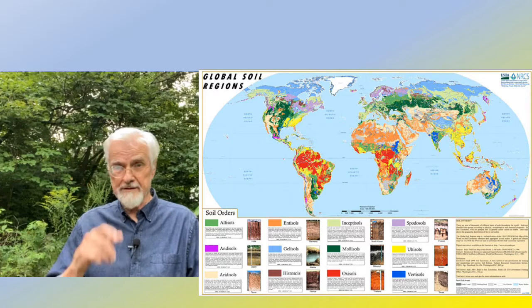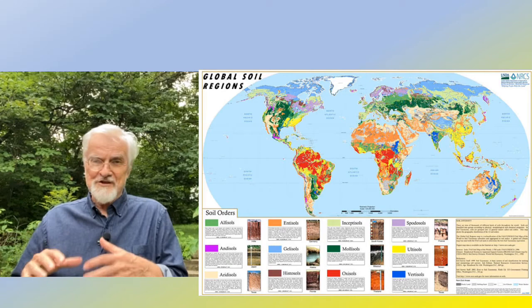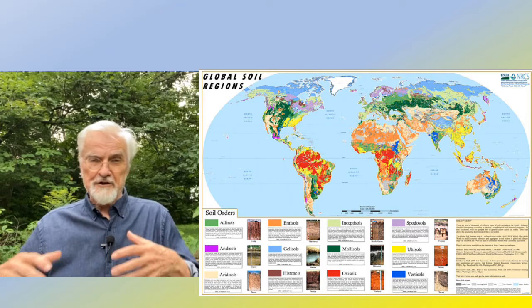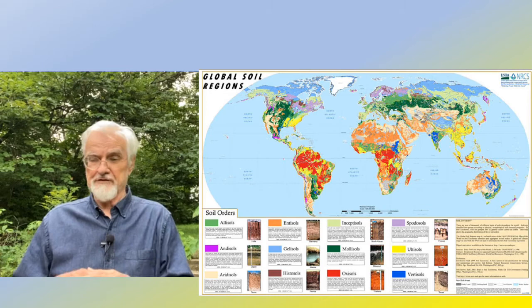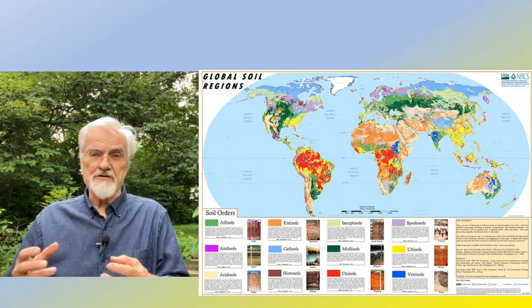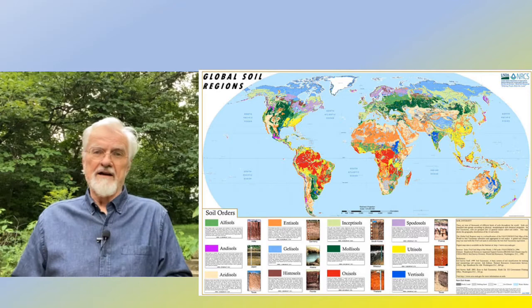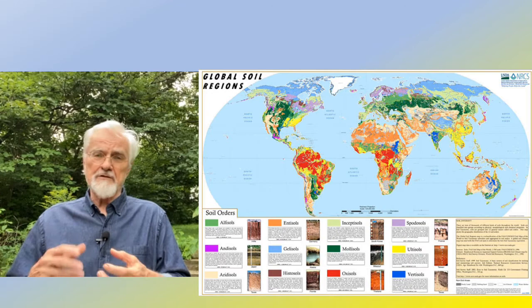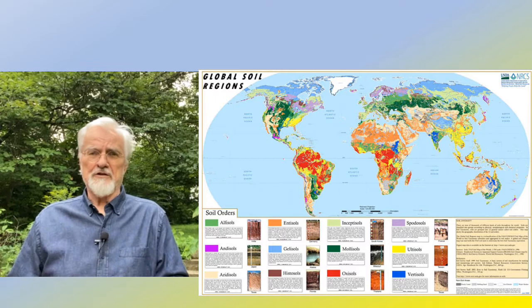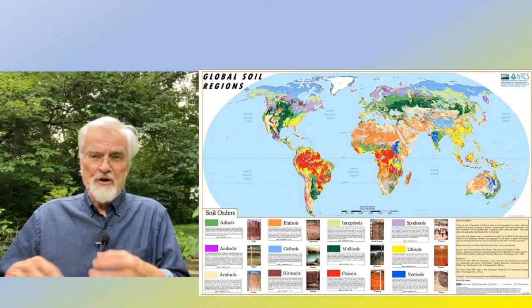This world map shows the global distribution of soil types. Oxisols appear as bright red, concentrated in the Brazilian Amazon and Congo Basin. Mollisols clearly mark the corn and wheat belts of North America, Europe, and Asia. Soil types aren't uniformly distributed — in Puerto Rico, for example, small patches of oxisols are interspersed with entisols and inceptisols. These world maps show general patterns but don't tell the whole story.